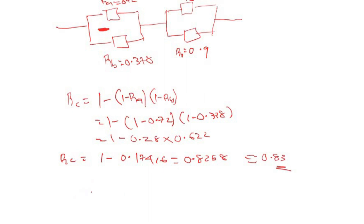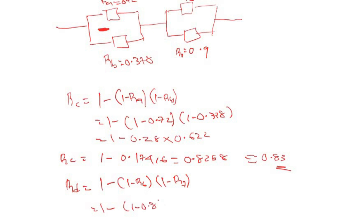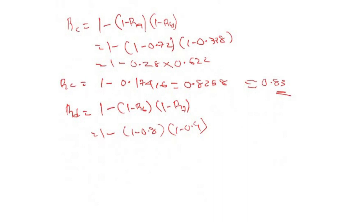Now let's call R_D the reliability of units 6 and 7 in parallel: R_D = 1 − (1 − R6)(1 − R7) = 1 − (1 − 0.8)(1 − 0.9) = 1 − (0.2 × 0.1) = 1 − 0.02 = 0.98.